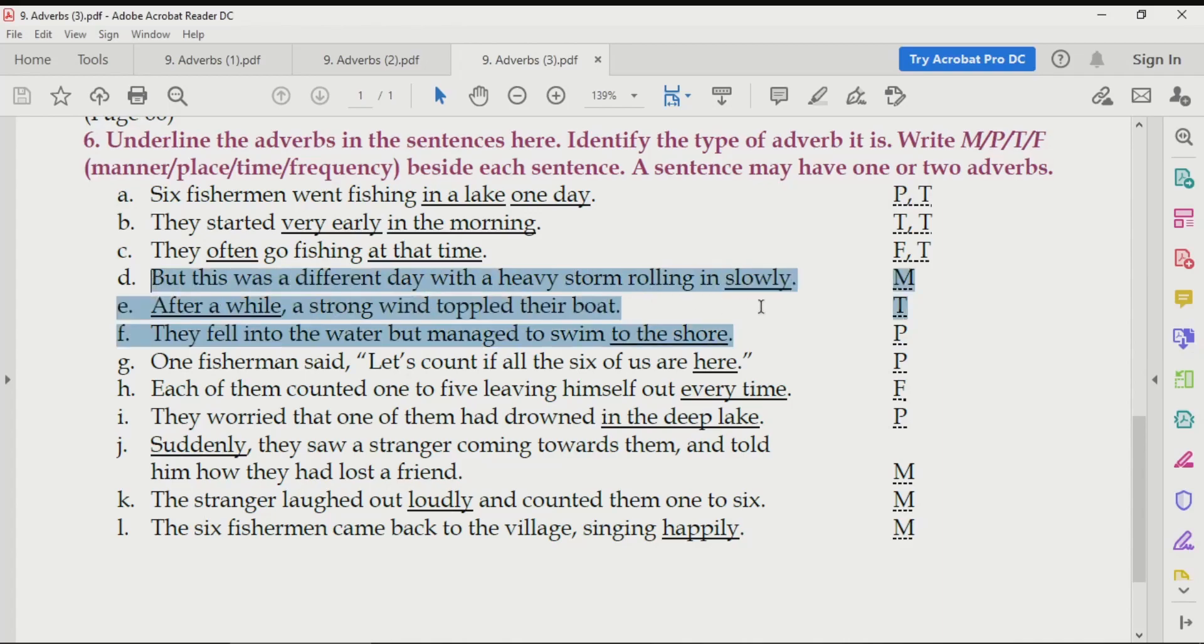But this was a different day with a heavy storm rolling in slowly. Although the sentence is very long, it is very easy to identify the word slowly because it is asking you the question in what way, in what manner? Slowly. So, we will write M that means manner. In the same way, after a while will be time. To the shore is a place. So, we will write P. Here is also a place. We will write P.